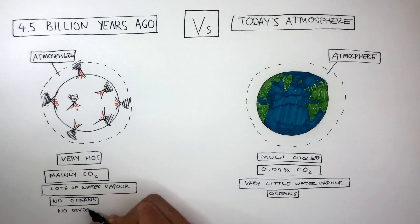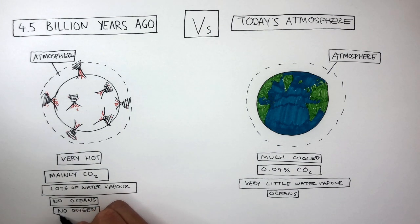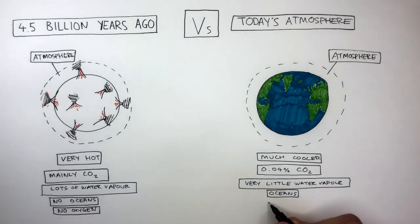There was no oxygen in Earth's atmosphere 4.5 billion years ago, but in today's atmosphere it is made up of 21% oxygen, a very big difference.